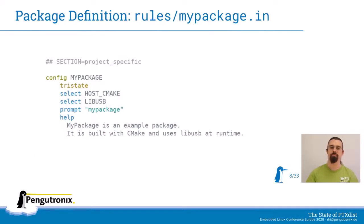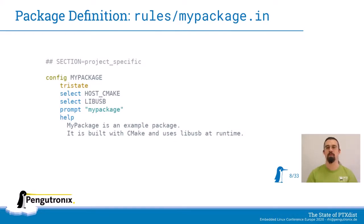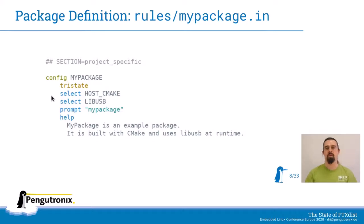Let's have a look at the .in file first. This is standard KConfig language. We're first defining the section for PTX-DISTS so it knows where to include it — in this case it's project specific, but you could also use one of the categories like editors or communication utilities. Then you define your config symbol, which is usually the same name of the package in uppercase. It is a tri-state option, so you can select yes, no, or as a module. Then you have to select your dependencies — in this case we need the CMake host tool because we're using CMake as a build system, and we're also selecting libUSB as a dependency. Then some prompt and help text.